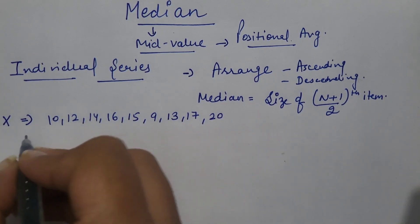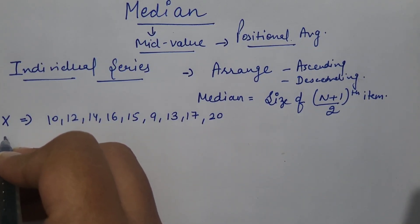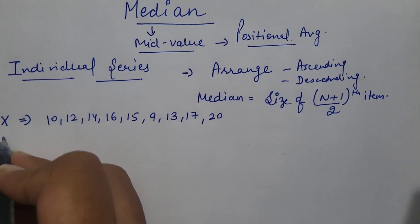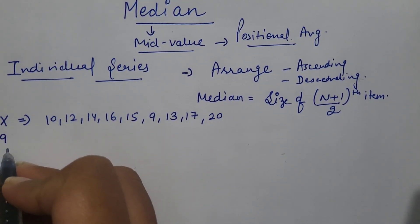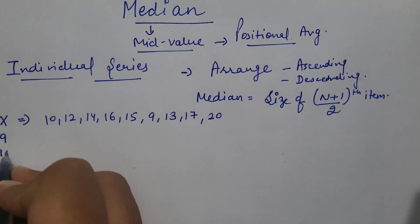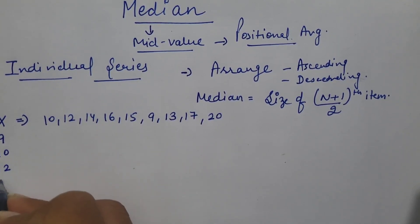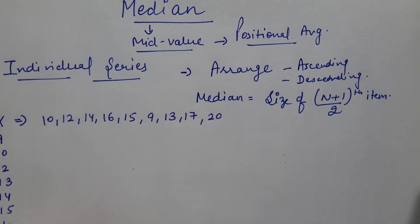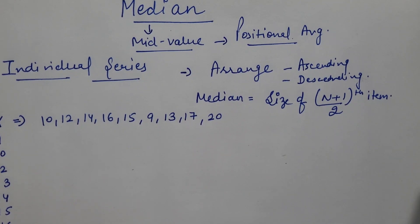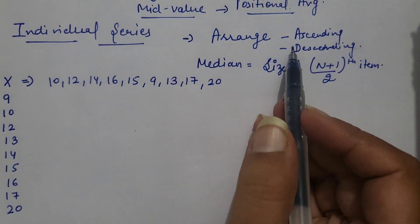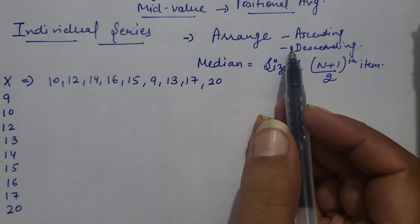First of all, I need to arrange this data in ascending or descending order. So here I am arranging this data in ascending order: 9, 10, 12, 13, 14, 15, 16, 17, and 20. So our first step is done — that is arrangement of series.